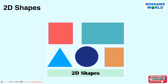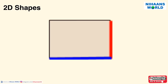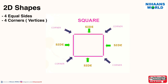Let's recap. Plane shapes are those that can be drawn on a flat surface such as paper. They have two measurements: length and breadth. So they are known as two-dimensional or 2D shapes. A square has four sides; all sides of a square are equal, and a square has four vertices.